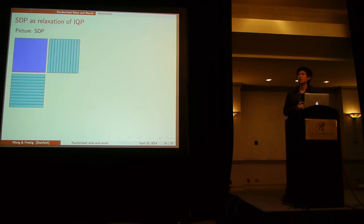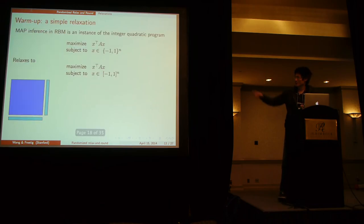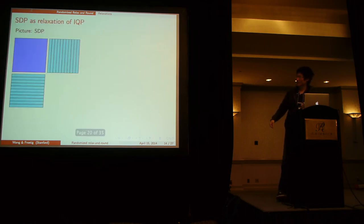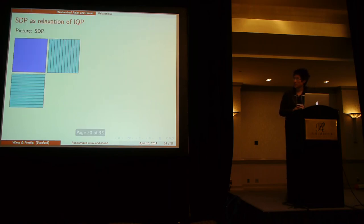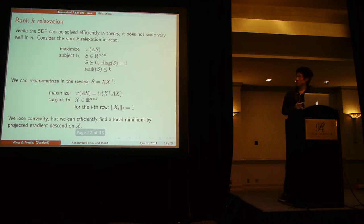And a way to visualize this, we did a reparametrization and drop the rank constraint. So previously you just used rank 1 vectors for x, and now let's say we just use this full matrix for x, where each row here have a norm 1 that's from the diagonal equal to 1 constraint.